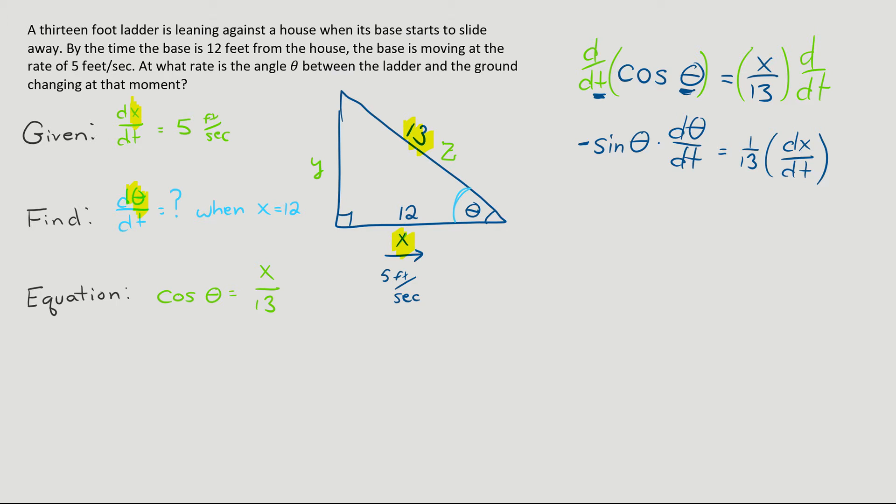So we go in and we plug in negative sine theta, which is, oh, I don't know. I don't know what sine theta is. So I'm going to return to my diagram and use it to help me find sine theta. Well, we know that sine is opposite over hypotenuse, so it's y over 13. But uh-oh, I don't know y.